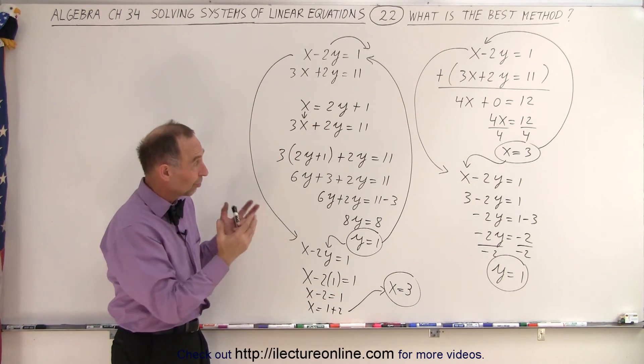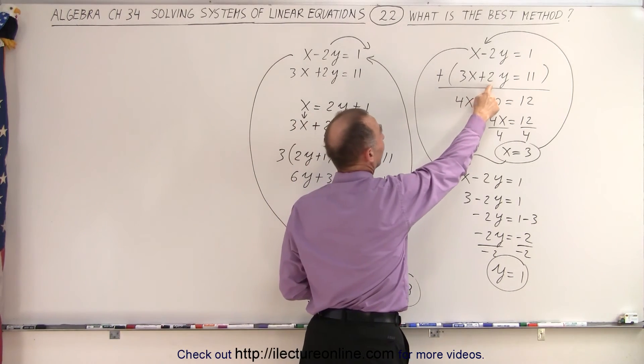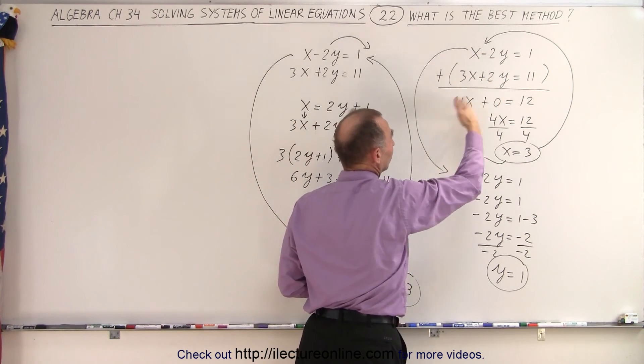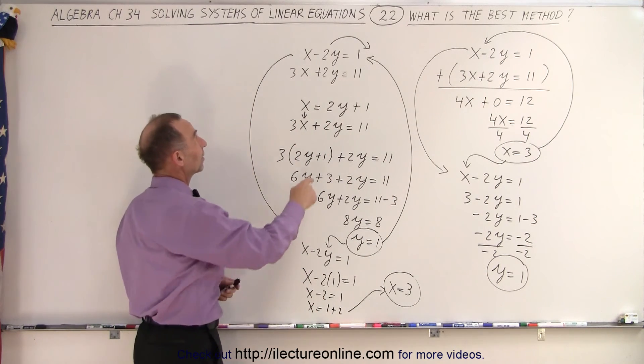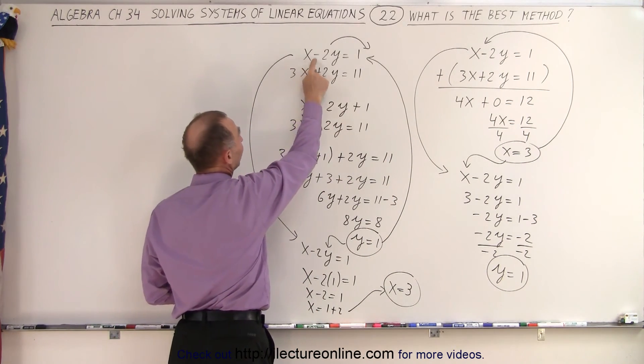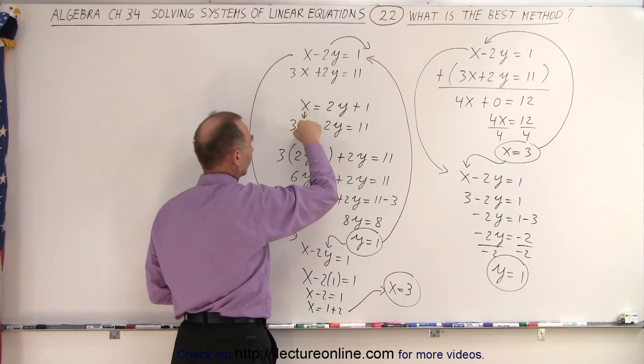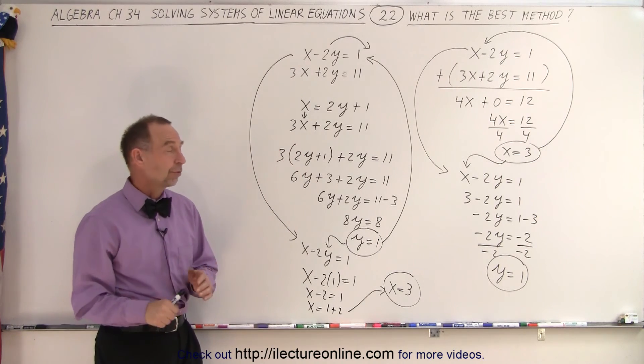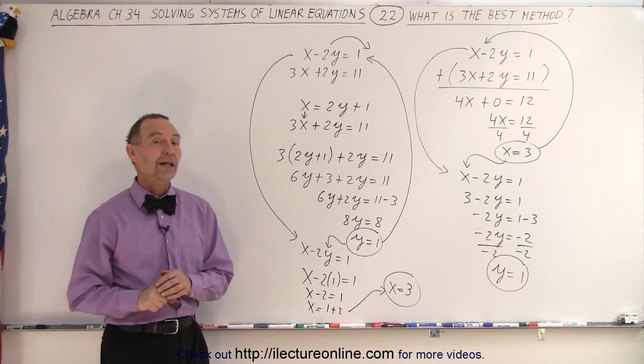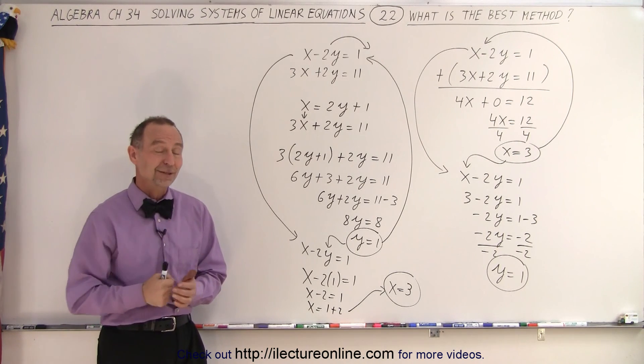So sometimes it's a preference, sometimes you can kind of look ahead and go, wow, they already gave it to me on a silver platter. I can simply add the two equations, eliminate y, that makes it a lot easier and faster. Or I can see, oh, I can just put this by itself, move the 2y across, and now have x in terms of y. I substitute in the second equation, either method is perfectly valid. It almost becomes a matter of choice unless they tell you which method you have to use. And that is how it's done.